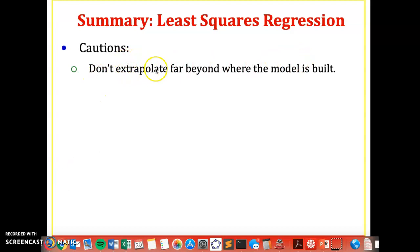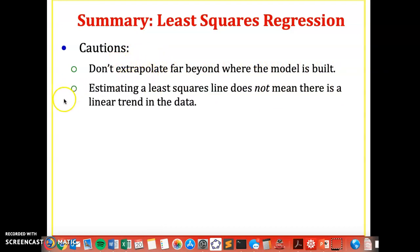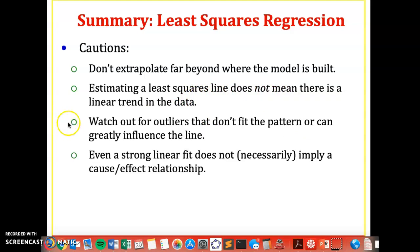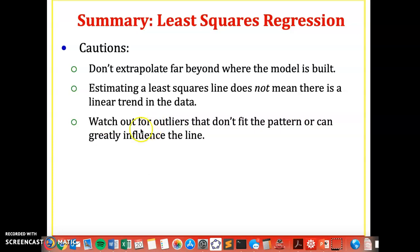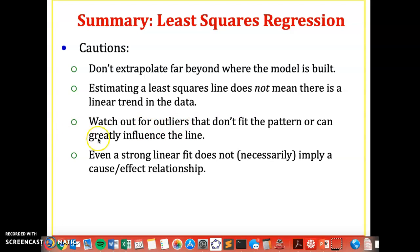And summarizing those cautions, don't extrapolate far beyond where the model is built. So if you have a bunch of data, extrapolate is moving outside, very far outside the known data. Estimating a least squares line does not mean there is a linear trend in the data. Software, computer, calculators will always calculate least squares line. If you're dealing with two quantitative variables, that does not mean there actually is a linear trend. Watch out for outliers, they don't fit the pattern or can greatly influence the line. We'll look at this more in the next activity, class activity. And even a strong linear fit does not imply causation. It just means there's a strong linear correlation. Don't forget, correlation is not causation. And for all these, always plot your data. It's not good just to look at a line or look at an equation. You want to actually look at your data, look at that scatter plot, which I expect you to create with software, something like StatKey or something else. Plot your data before you make any predictions or do anything like that.